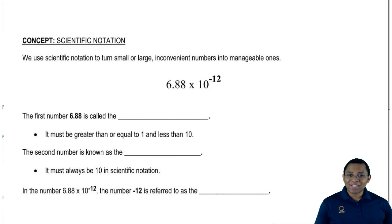Now, in order to understand scientific notation, you just have to remember the three components that make it up. Let's take a look at this number. We have 6.88 times 10 to the negative 12.